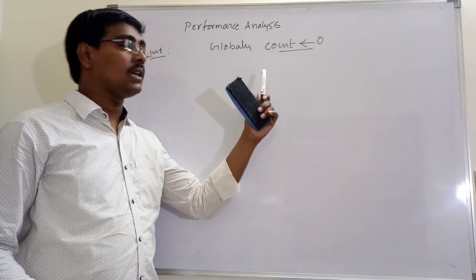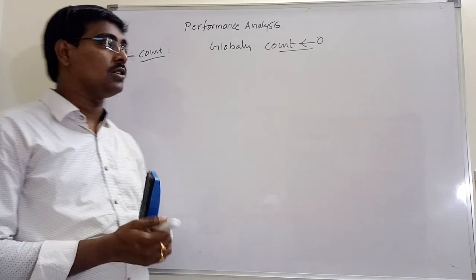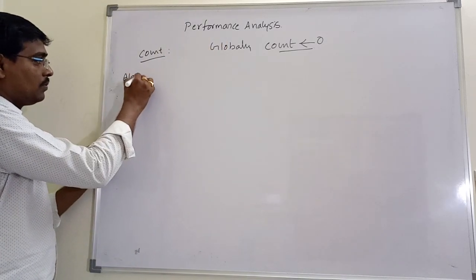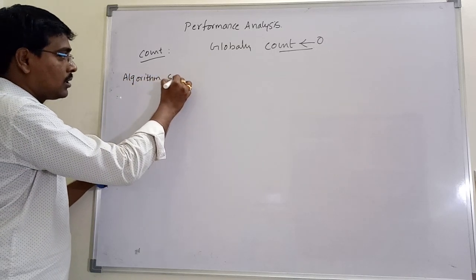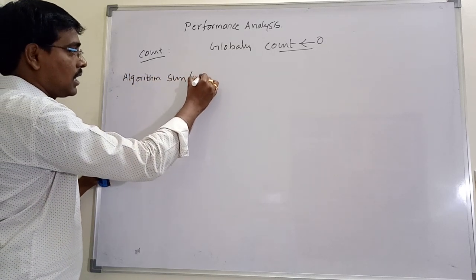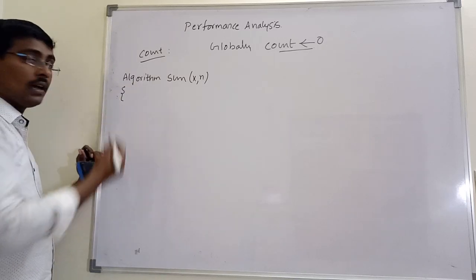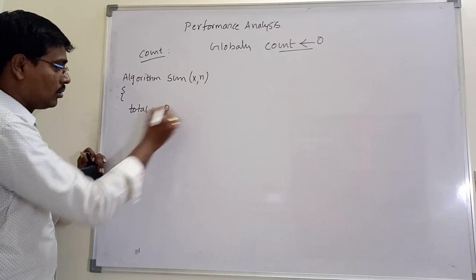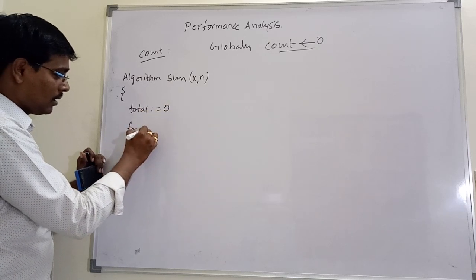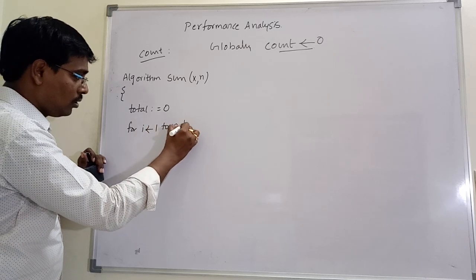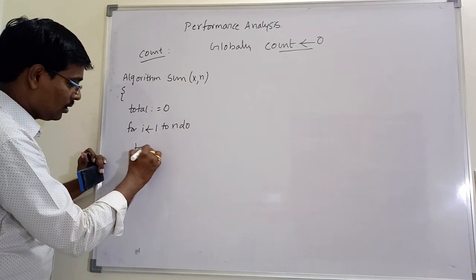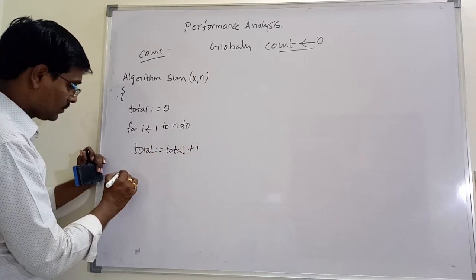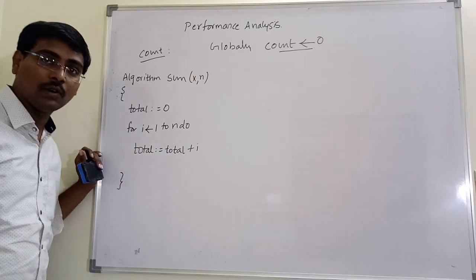Here valid step means the step that is needed for execution. For example, consider an example program: Algorithm sum(x, n). Suppose total is equal to 0. For i equal to 1 to n do, total is equal to total plus i.